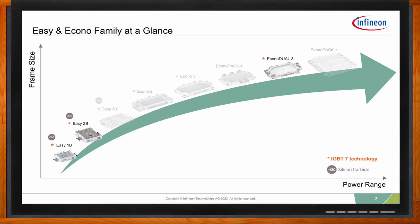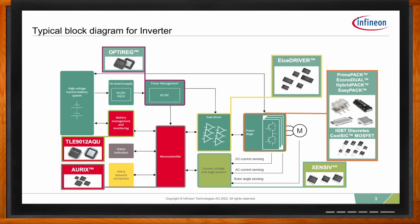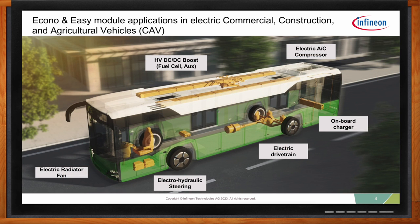So these modules can be used in inverters — can you explain where they fit in the system design? This is a typical block diagram for an inverter. The Econo and Easy modules are used in the power stage, which is often one of the first starting points for design engineers. Infineon does have the full system solution beyond the power stage, including gate drivers, OptiReg power management devices, microcontrollers, and current sensors. One segment I focus on is transportation — electric buses are a good example. The EconoDual 3 is typically used for the main traction inverter, whereas the Easy modules are used for auxiliary drives like radiator fans, electro-hydraulic steering, onboard chargers, high-voltage DC-to-DC boost, and AC compressors.